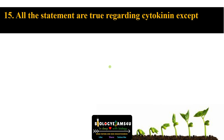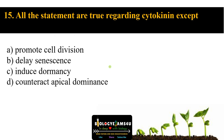Question number fifteen: all the statements are true regarding cytokinin except. Options: A promote cell division, B delay senescence, C induce dormancy, D counteract apical dominance. Cytokinin promotes cell division — true. Delays senescence — true, as it is a growth promoter. Induces dormancy — this is the wrong statement. Counteracts apical dominance — true, as it promotes lateral bud formation. So option C is the answer.